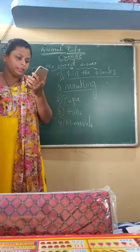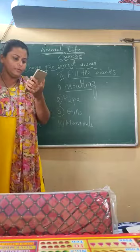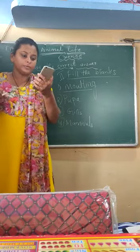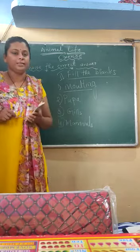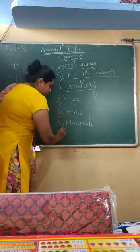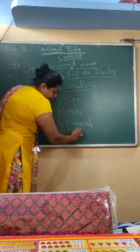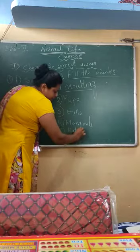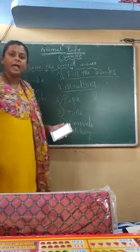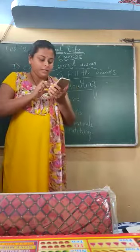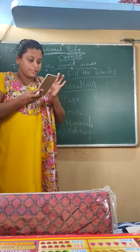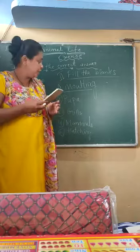The next question is: the young ones of a bird come out of their eggs during a process called — it's very easy — that is hatching. I hope we have all finished the second section.